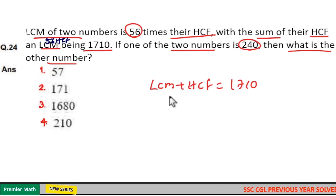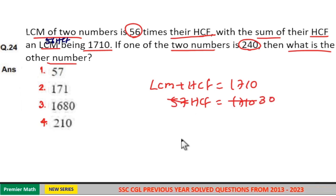So here 57 HCF equals 1710, which means 57 goes 30 times in 1710.